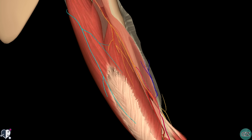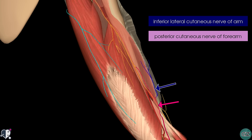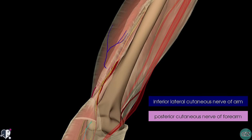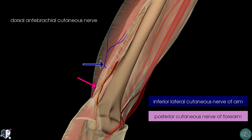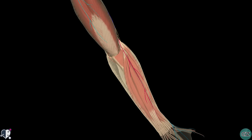The radial nerve gives off two more sensory branches in the arm: the inferior lateral cutaneous nerve of the arm and the posterior cutaneous nerve of the forearm. From this posterior view, you can see the inferior lateral cutaneous nerve of the arm in dark blue and the posterior cutaneous nerve of the forearm in pink. Switching to an anterior view, the inferior lateral cutaneous nerve perforates through the lateral head of the triceps to innervate the skin of the lateral part of the lower half of the arm. The posterior cutaneous nerve of the forearm, also known as the dorsal antebrachial cutaneous nerve, also perforates through the lateral head of the triceps and passes posteriorly to innervate a strip of skin down the middle of the posterior forearm.